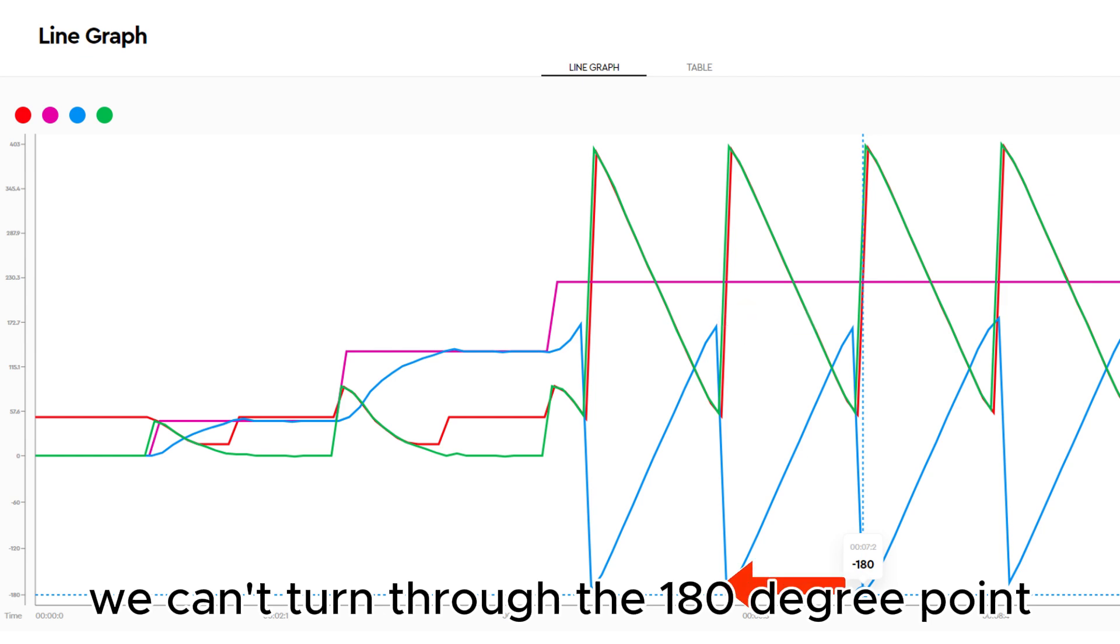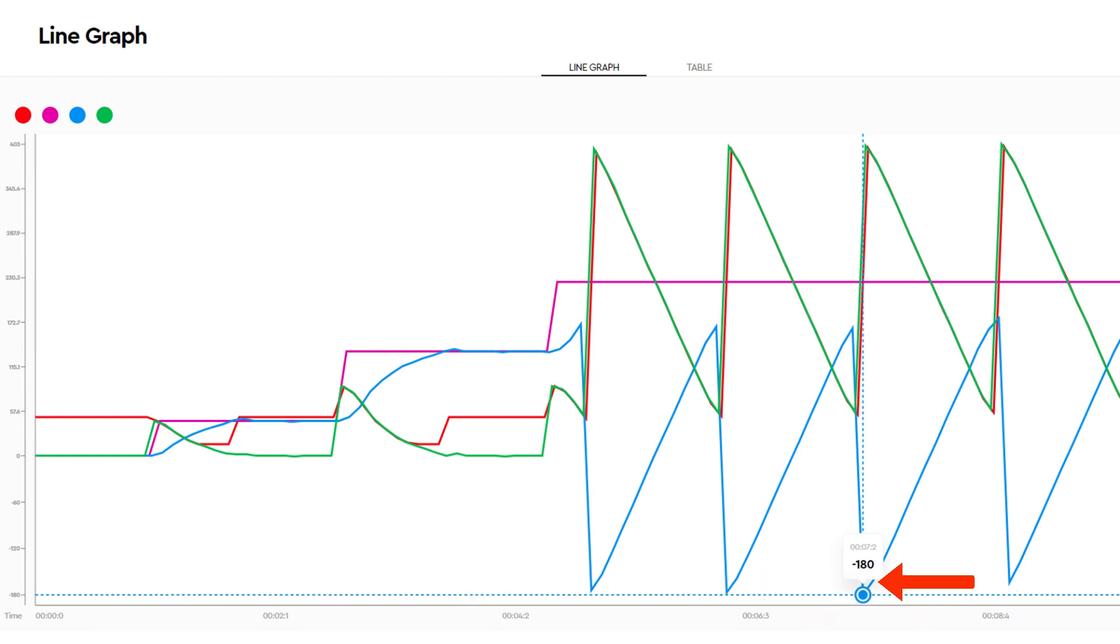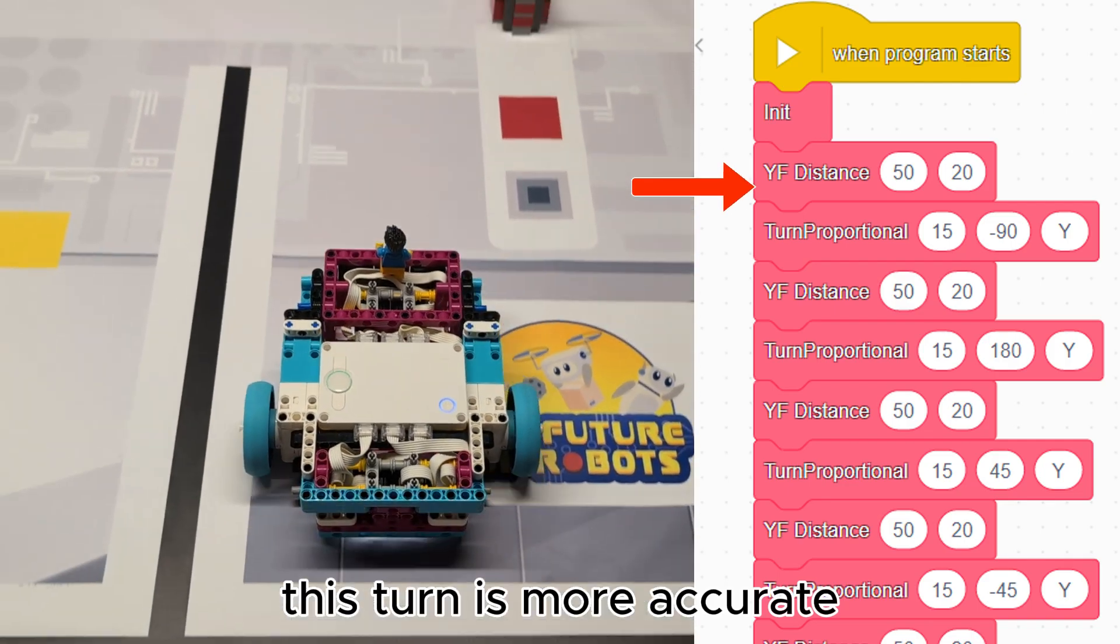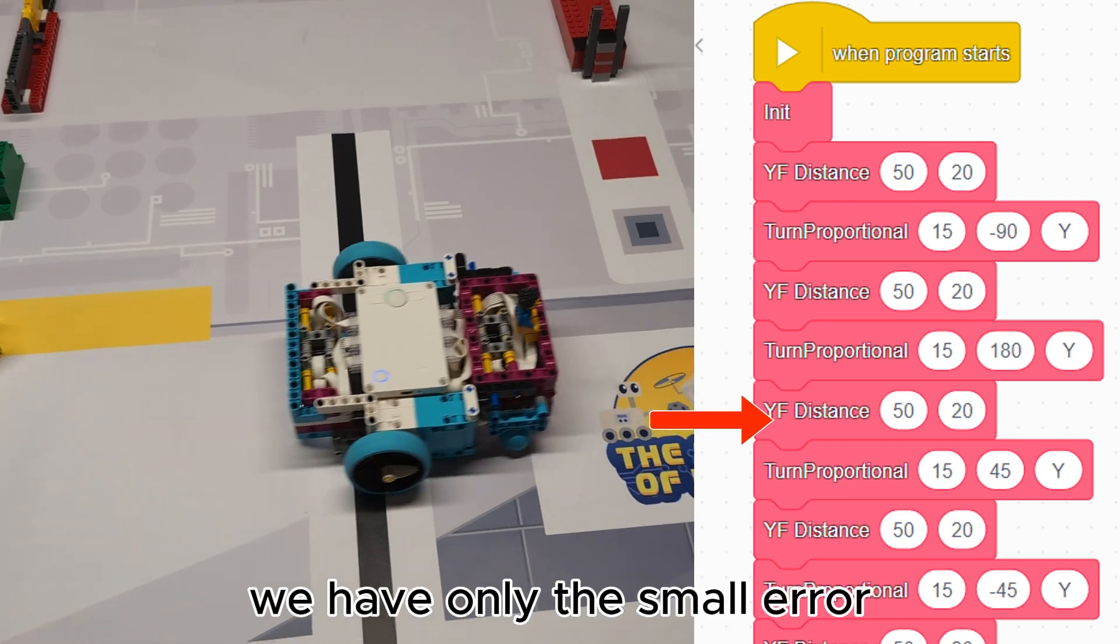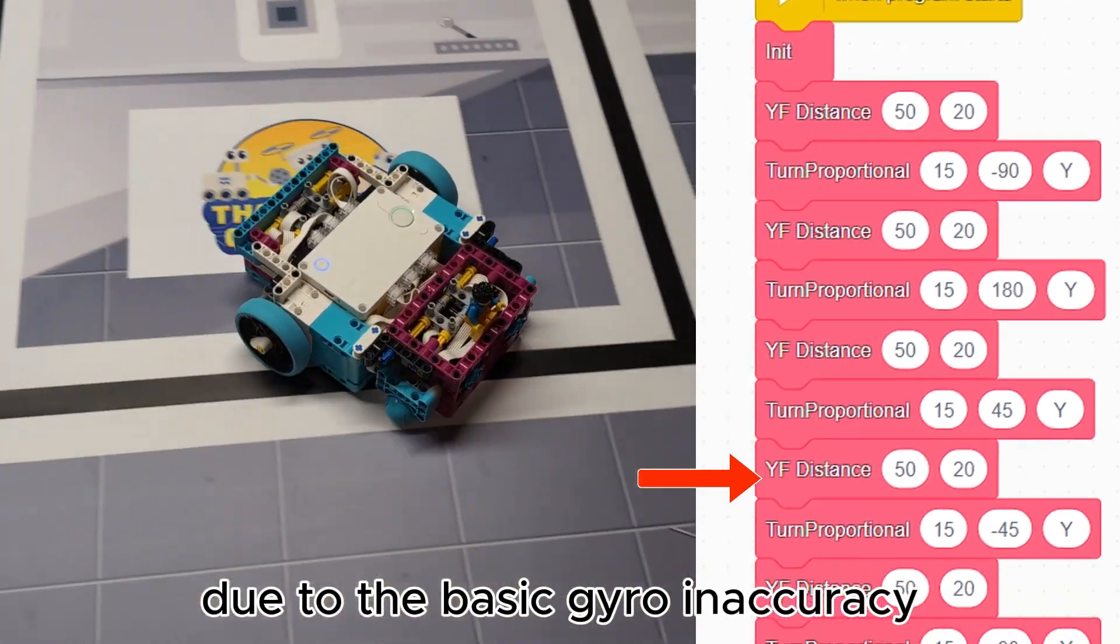We can't turn through the 180 degree point. I hope to have a solution to this soon. This turn is more accurate if we don't reset the yaw to zero. We have only the small error due to the basic gyro inaccuracy.